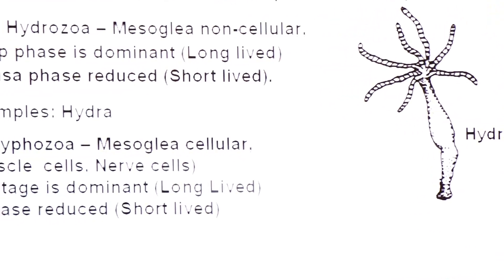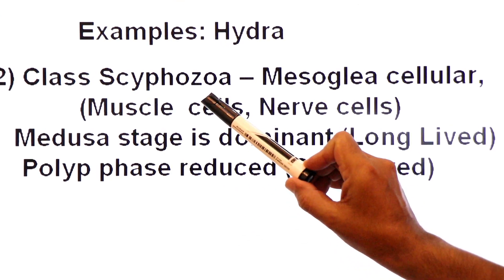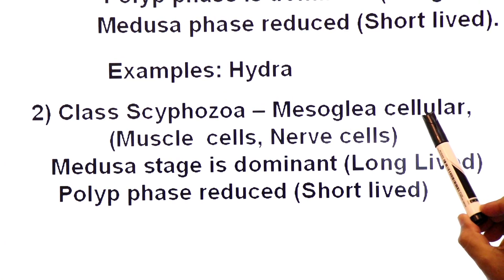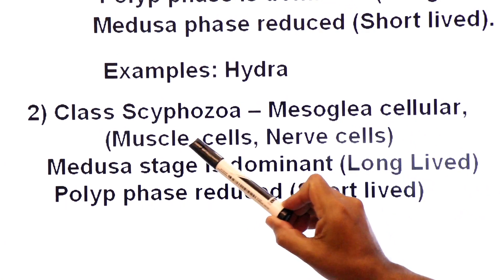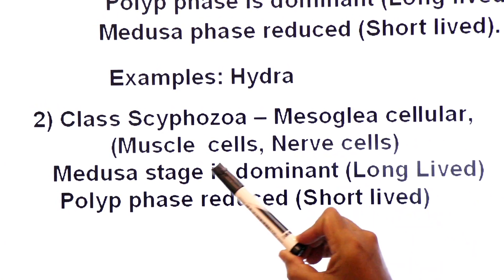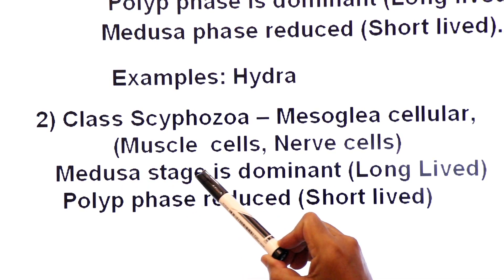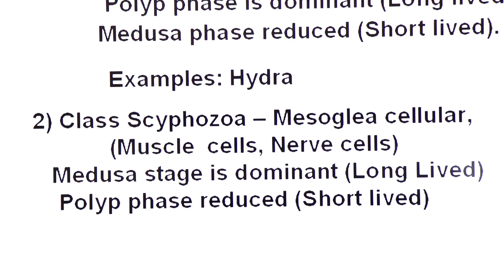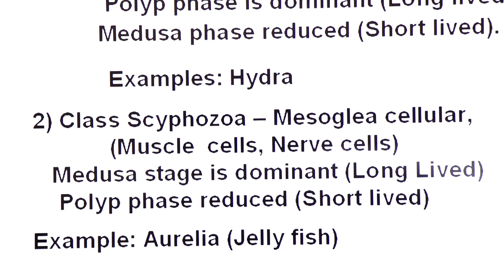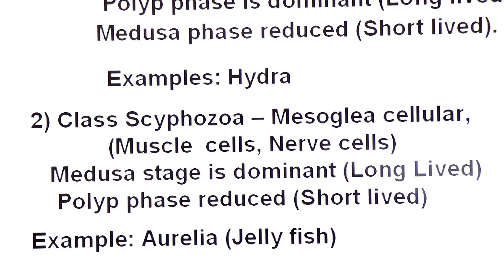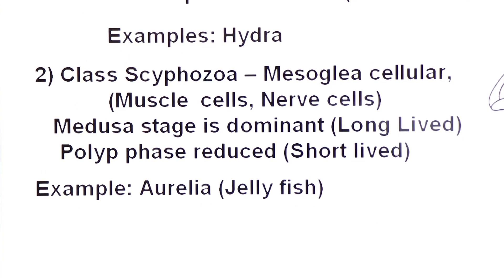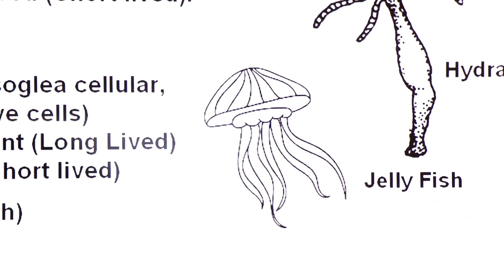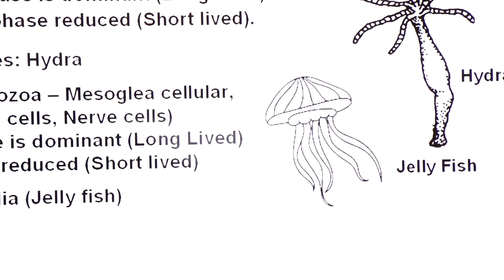Class two is Scyphozoa. Here the mesoglea is cellular, containing muscle cells and nerve cells. In this class, the medusa stage is dominant (long-lived) and the polyp phase is reduced (short-lived). The example is Aurelia, known as jellyfish.